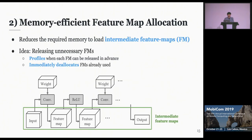The second technique is memory-efficient feature map allocation. This reduces the required memory to load intermediate feature maps. The idea is very simple: releasing unnecessary feature maps. For a given model, our system profiles when each feature map can be released in advance, and during runtime, it immediately deallocates the feature map which has already been used.